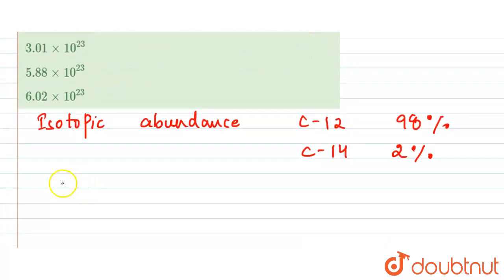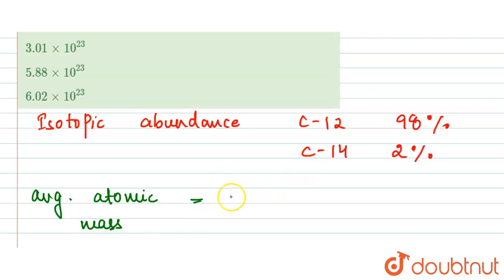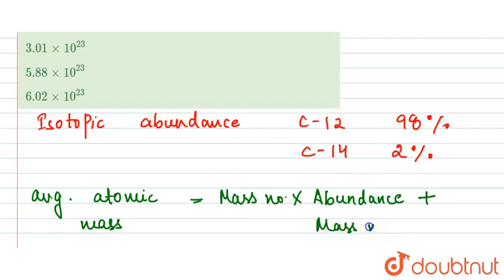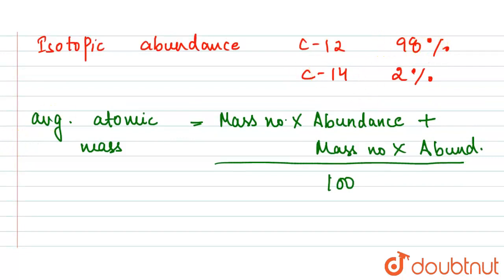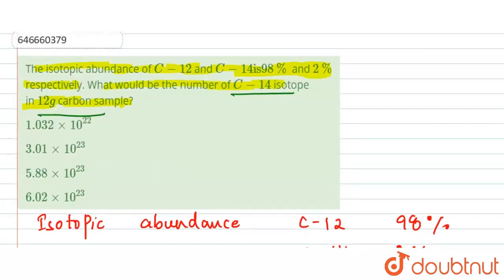Before that, we will find out the average atomic mass for both isotopes. The formula is: mass number multiplied by relative abundance for the first isotope, plus mass number multiplied by abundance for the second isotope, all divided by 100 because we have percentages. This applies for C-12 and C-14 respectively.